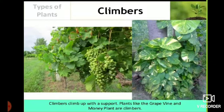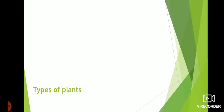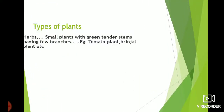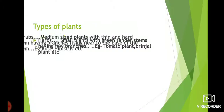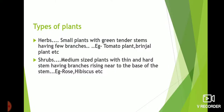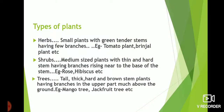Climbers climb up with a support. Plants like the grapevine and money plant are climbers. To sum up the different types of plants: Herbs are small plants with green tender stems having few branches — examples are the tomato plant and brinjal plant. Shrubs are medium-sized plants with thin and hard stems having branches rising near the base — rose and hibiscus are examples.